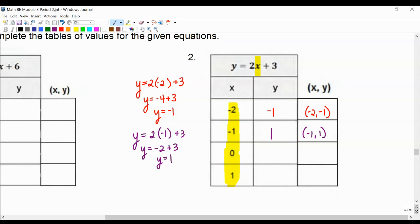Next, our plug-in value is 0. Two times 0 plus 3 is y equals 0 plus 3. Two times 0 is 0, and that's 3.